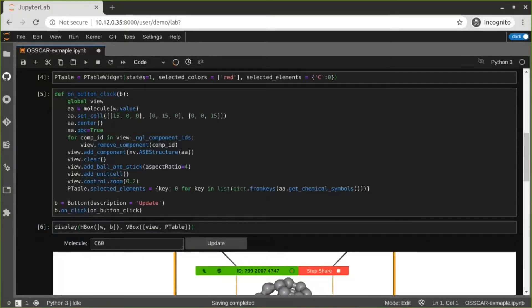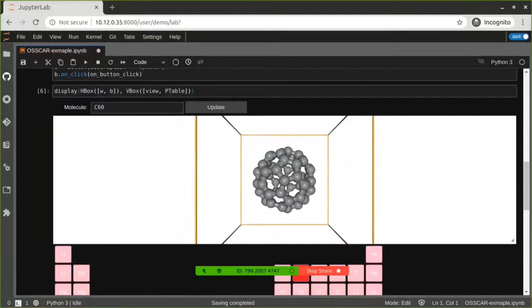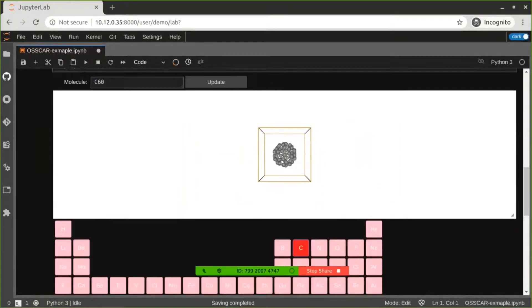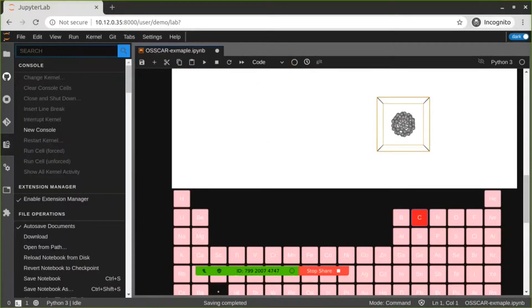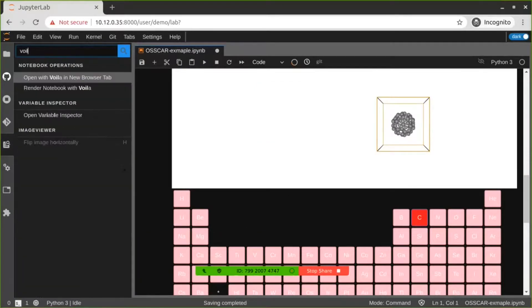We display all these widgets. Then we use Voila to render this notebook.